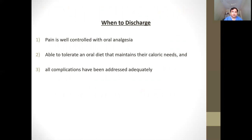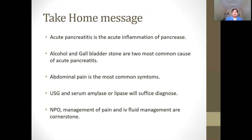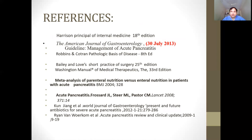Discharge criteria: no pain on oral analgesics, all complications addressed, and patient tolerating oral diet. Take-home messages: acute pancreatitis is acute inflammation of the exocrine pancreas; alcohol and gallstones are the two most common causes; abdominal pain is the most common symptom; ultrasound and serum amylase or lipase suffice for diagnosis; and the cornerstones of management are nil per oral, pain management with narcotic analgesics, and IV fluid with Ringer's lactate. Thank you.